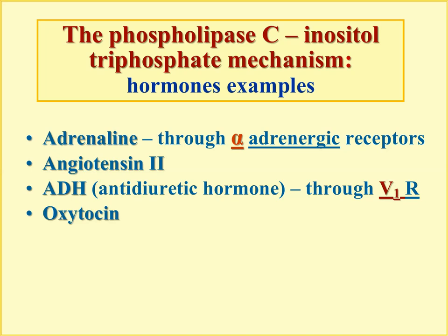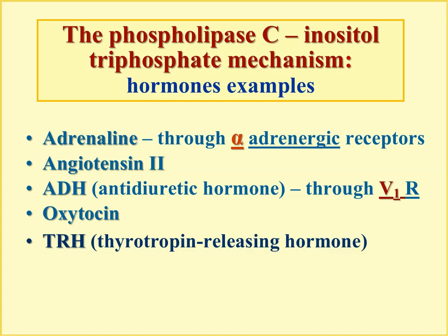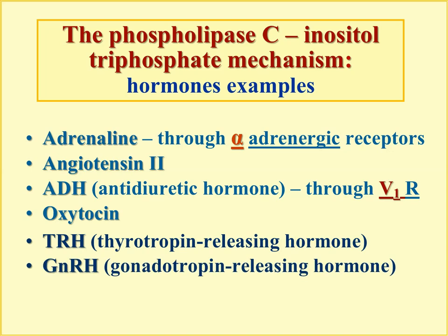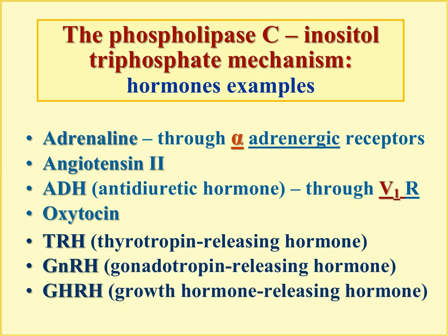A number of releasing hormones — a group produced by the hypothalamus to stimulate release of anterior pituitary hormones — also use this pathway. These include thyrotropin-releasing hormone, gonadotropin-releasing hormone, and growth hormone-releasing hormone, which achieve anterior pituitary hormone release through the phospholipase C pathway. It may not be easy to memorize all these examples immediately, but some can be memorized early and others while studying other sections of physiology.